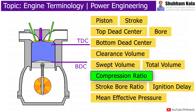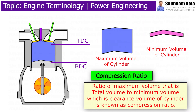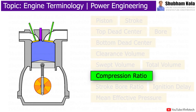The ratio of the maximum volume of the cylinder, that is total volume, to the minimum volume of the cylinder, which is clearance volume, is known as compression ratio. The compression ratio for a spark ignition engine is 8 to 12, and for a compression ignition engine it is 12 to 24.